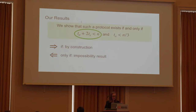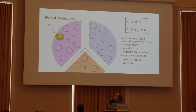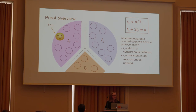We've shown the 'if' direction by construction. Now for the 'only if' — the impossibility result. Imagine the parties are divided into three groups, not visible to the honest players. We have TS many in the purple group, TS many in the blue group, and TA many in the orange group. This violates our bound since TA + 2TS is at least N. We assume towards a contradiction that we have a protocol that's TS-valid in a synchronous network and TA-consistent in an asynchronous network.